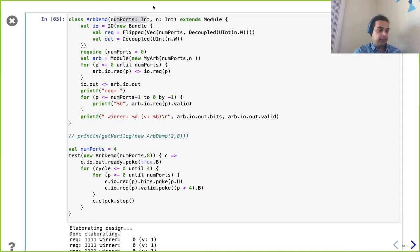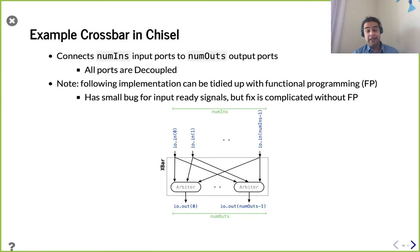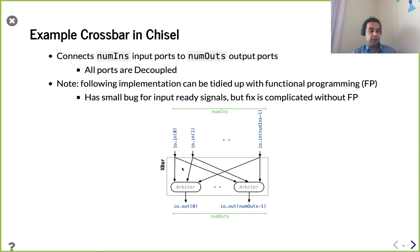Now let's put it all together. We're making something called a crossbar — a simple network component. The way a crossbar works, it has some number of inputs and some number of outputs. For today, I'm using `num_ins` and `num_outs` to be very explicit, but canonical naming would be N by M for N inputs going to M outputs. Notice these ports are one-directional — this could be bi-directional, but for us right now, it's unidirectional.